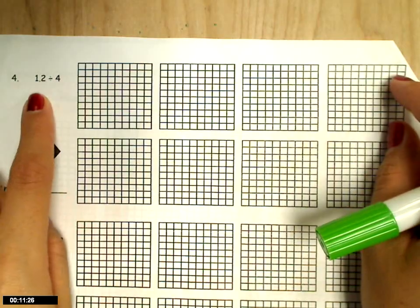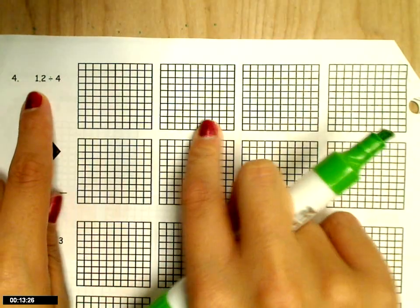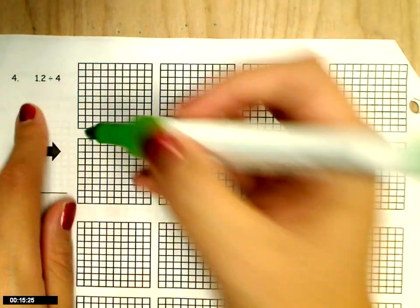The 1 and 2 tenths tells me how many I need to shade in, which is one whole and then 2 tenths.